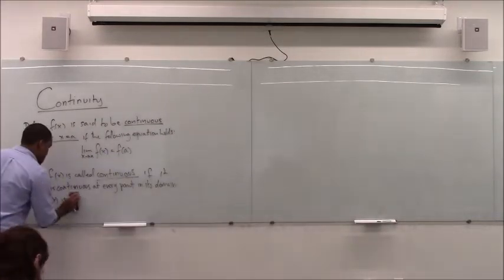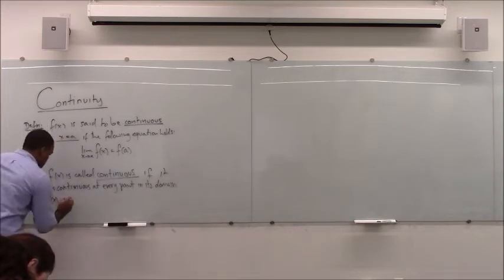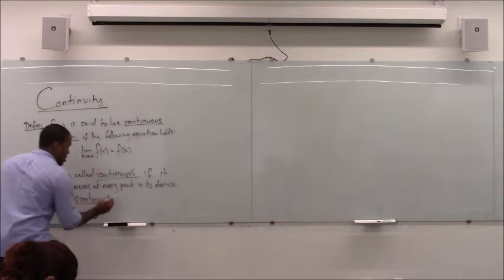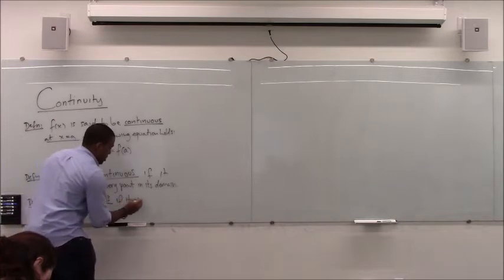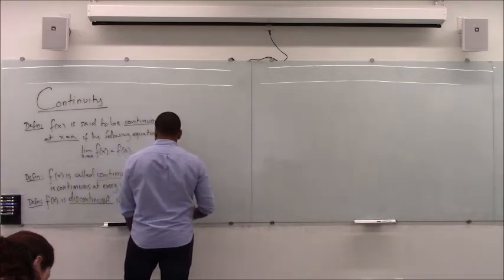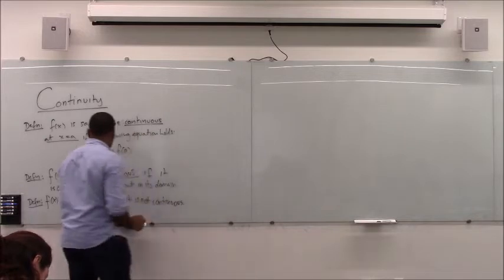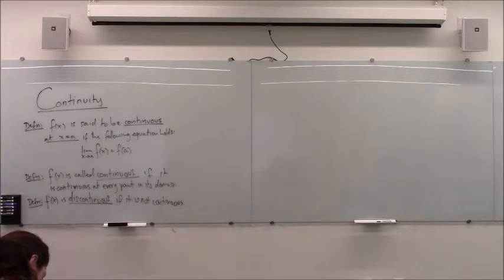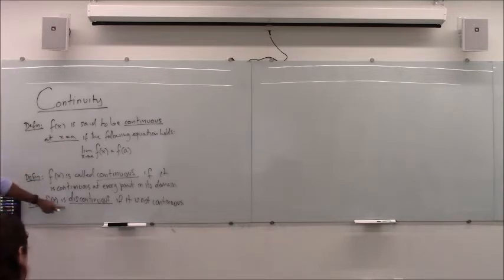To call something not continuous, we use the prefix 'dis,' so it's discontinuous. f of x is discontinuous if it is not continuous. Or you might say f has a discontinuity. There are many types of discontinuities, but we're not really going to get into that. So these are the basic definitions: f is continuous at a certain point if this equation holds at that point; if this equation holds for every point in the domain, the function is called continuous in general; at any point where this equation does not hold, the function is said to be discontinuous there.